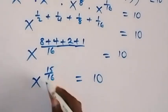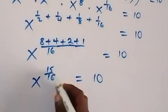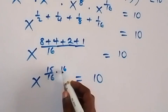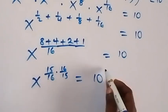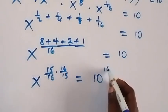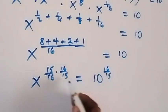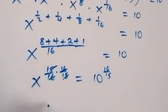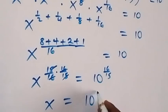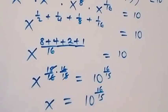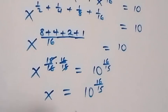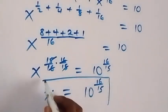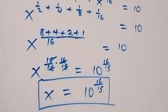We remove this power by multiplying both sides by the reciprocal, which is 16 over 15, such that the powers cancel each other, and we are left with x equals 10 raised to power 16 over 15 — which is the same answer as from Method One.